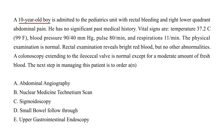A 10-year-old boy is admitted to the pediatric unit with rectal bleeding and right lower quadrant abdominal pain. He has no significant past medical history. Temperature is 97, blood pressure 90, pulse 80, respirations 11. Physical exam is normal. Rectal exam reveals bright red blood but no other abnormalities. A colonoscopy extending to the ileocecal valve is normal except for a moderate amount of fresh blood. What is the next step in managing this patient?